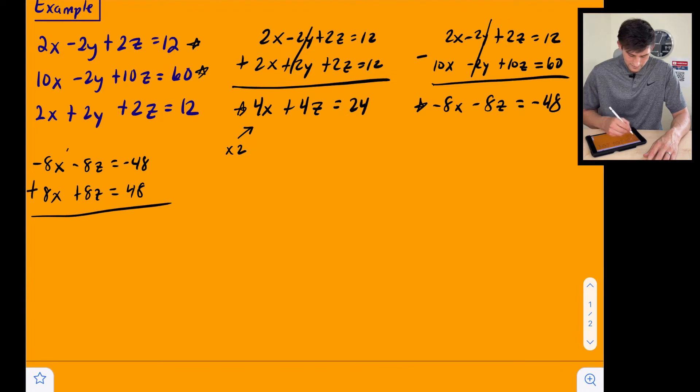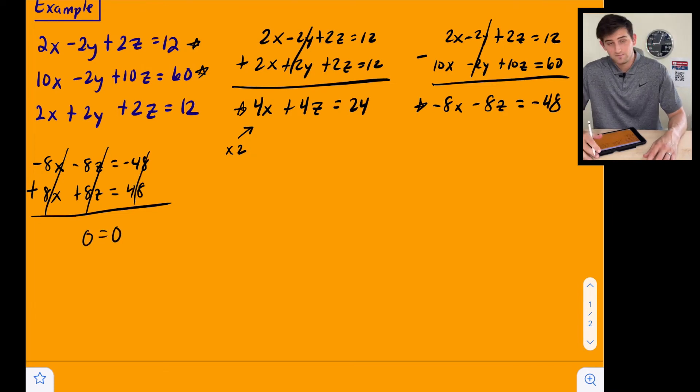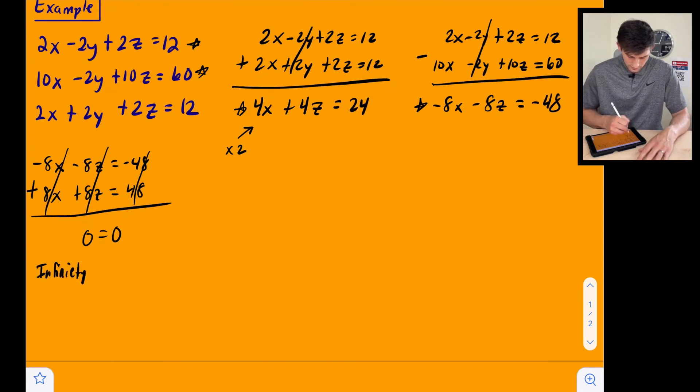All right. And now look what happens when we add these, negative 8x and positive 8x, negative 8z and positive 8z, negative 48 and positive 48. So everything eliminates, right? And we're left with something that's true, 0 equals 0. So we can say right here there are infinitely many solutions.